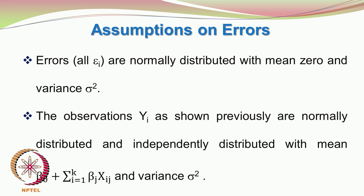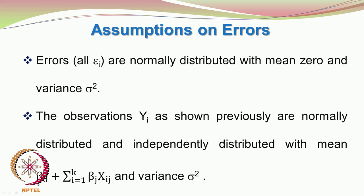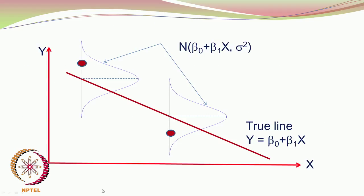The observations yi are also normally distributed and independently distributed with mean beta 0 plus the sum from i=1 to k of beta i xij, and variance sigma squared. The response is nothing but the true model beta 0 plus that sum, plus the error. When your errors are normally distributed and you add a constant to it, the response will also be normally distributed. The true value — which acts as the mean of the zero-mean error — is the exact model beta 0 plus the sum of beta i xij.